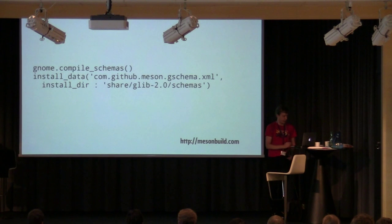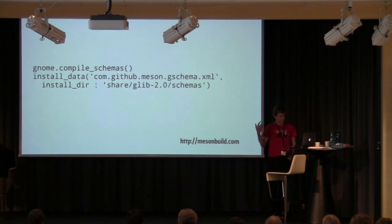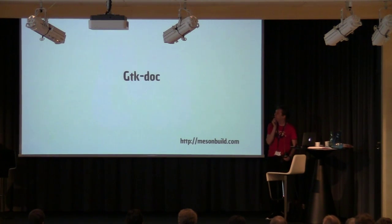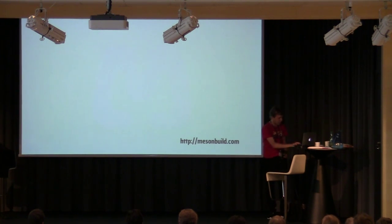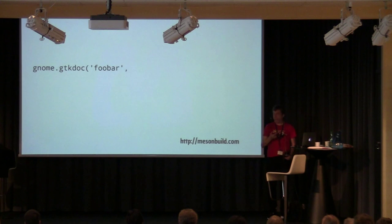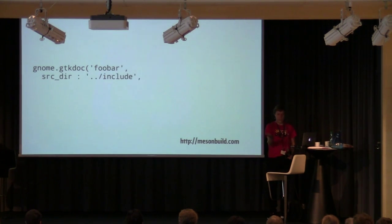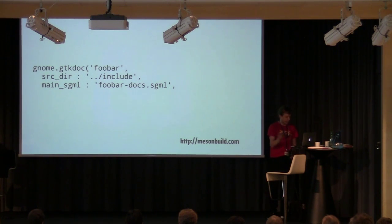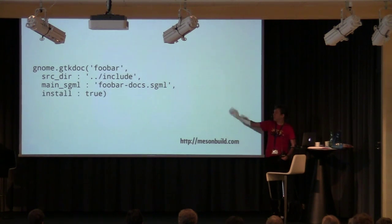For GSchemas, you just reference the schema files in your current directory and install them like any other piece of data. For GDK documentation - this actually landed three days ago - you use the 'gdk.method' with a name, source files, and your main SGML or XML file (this slide was written before XML support existed), and you specify that you want the documentation installed.